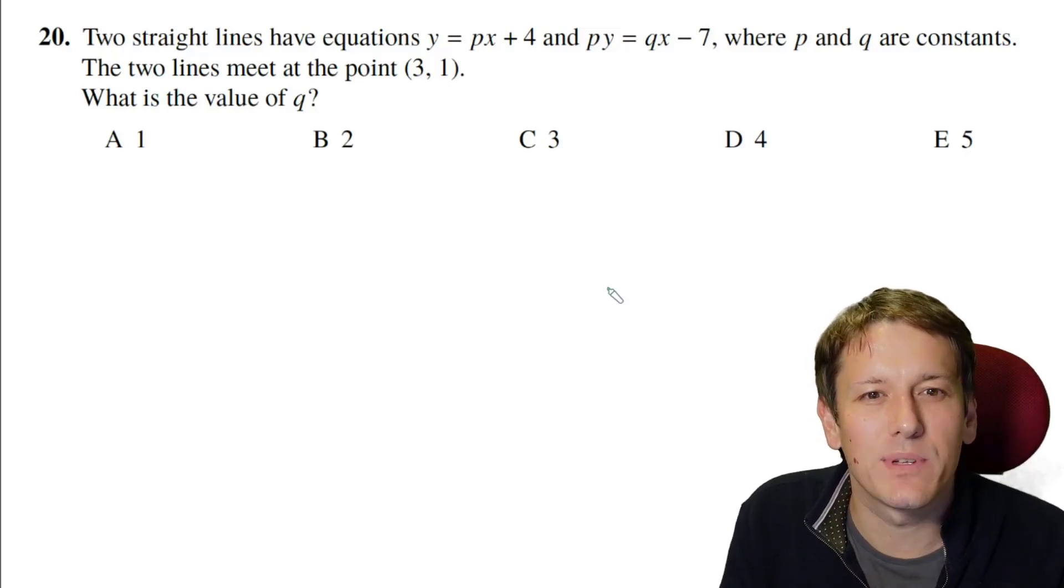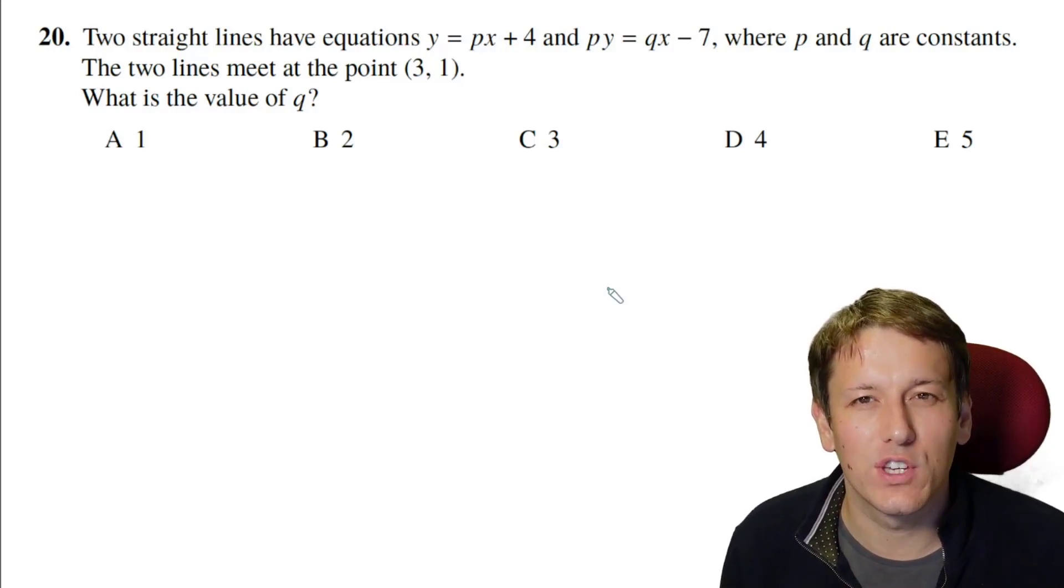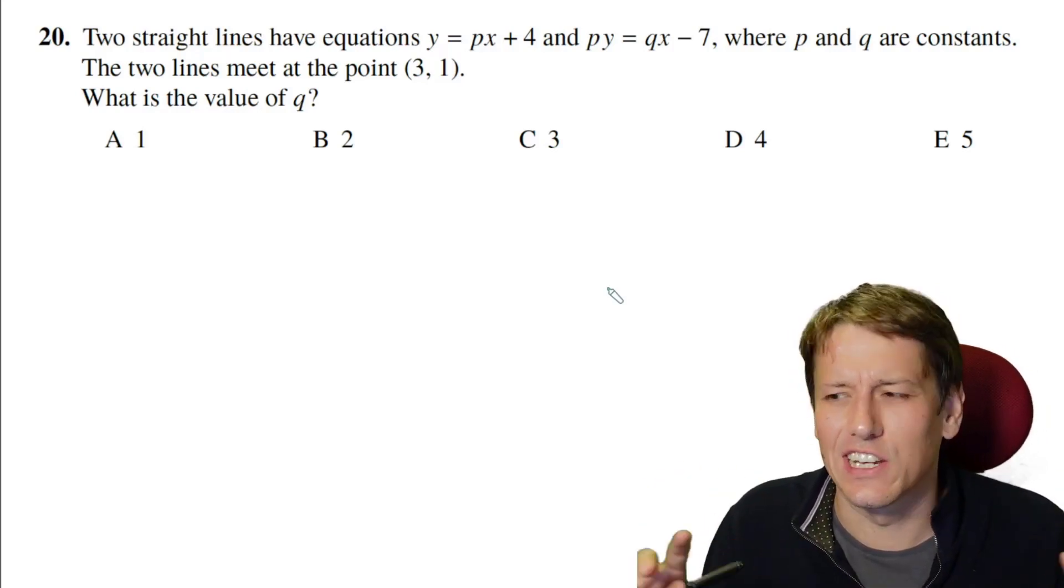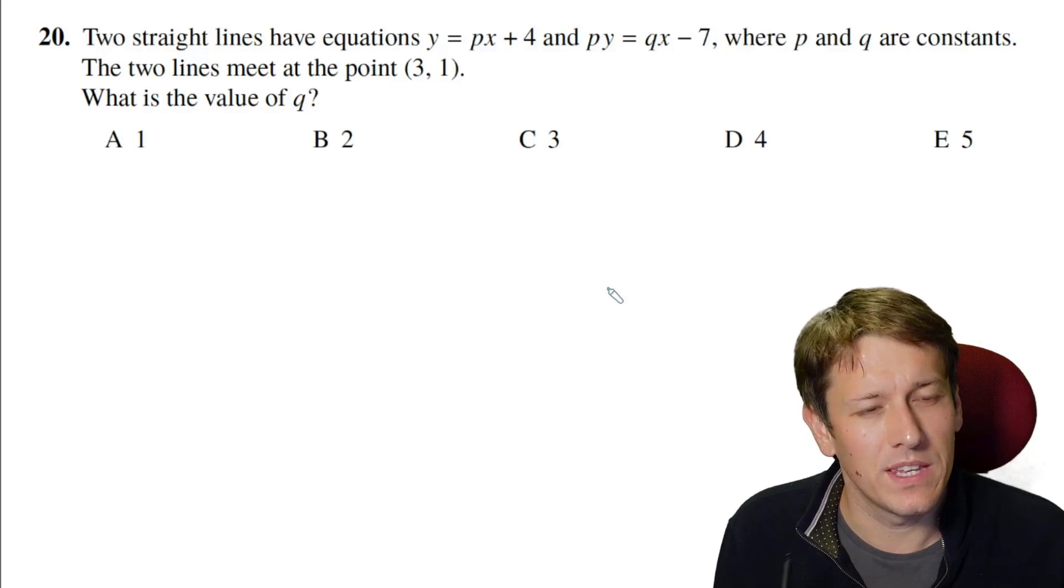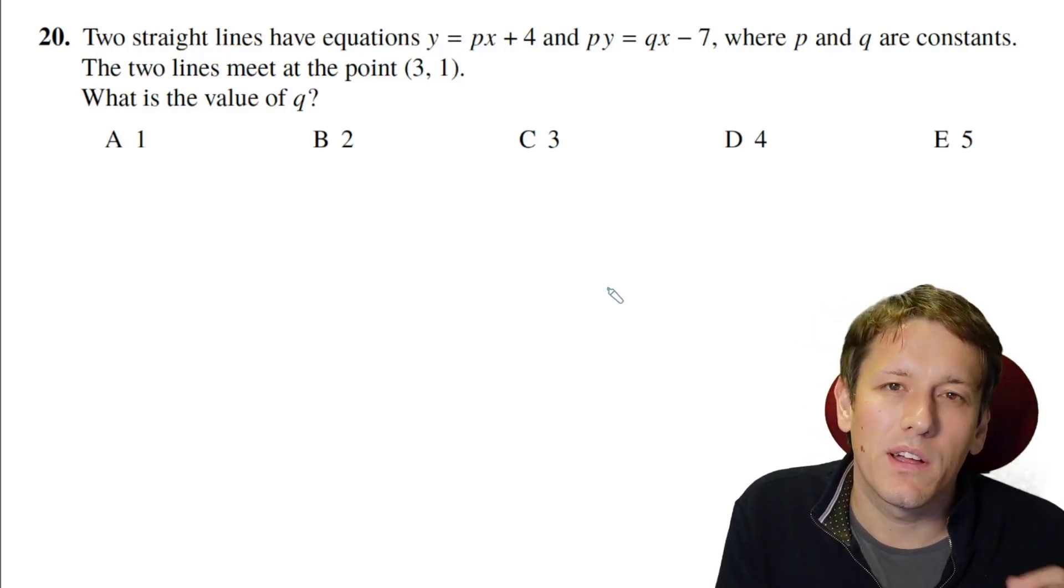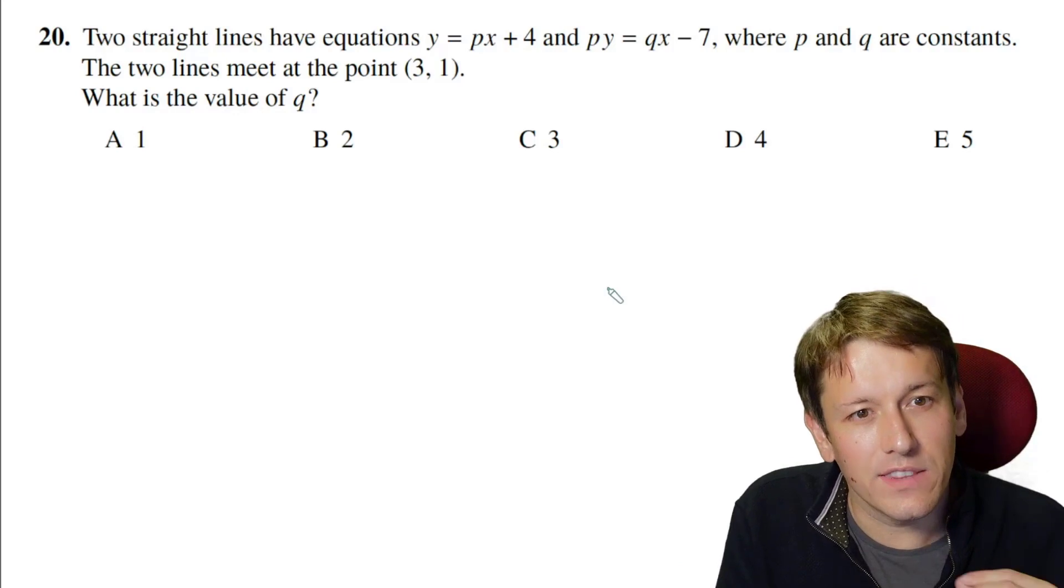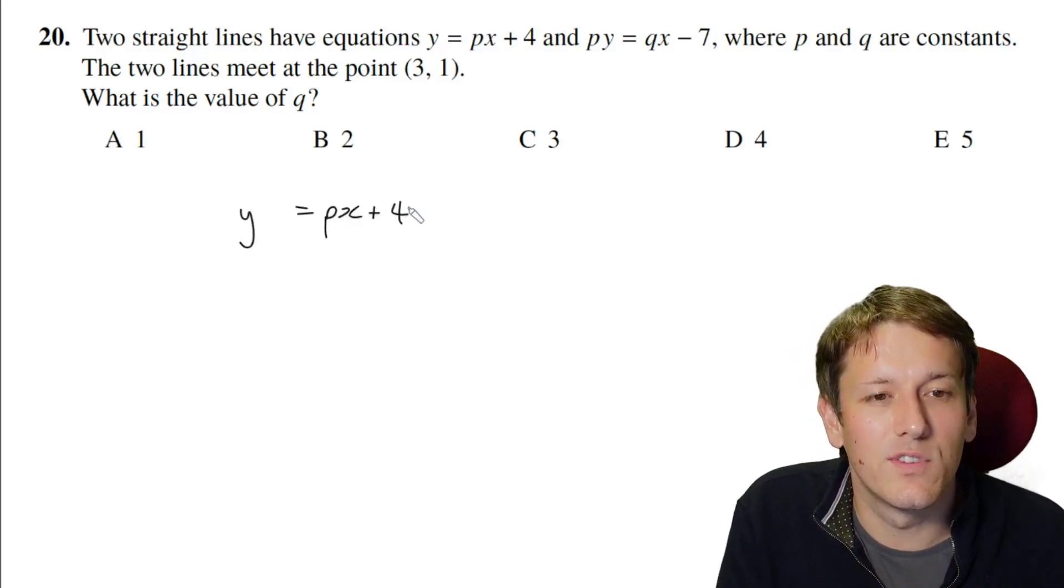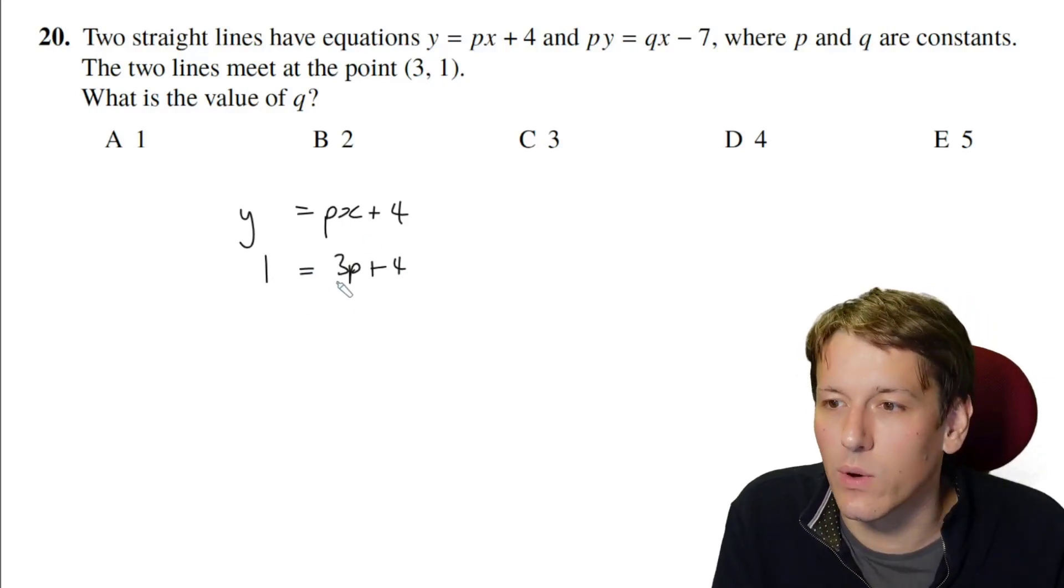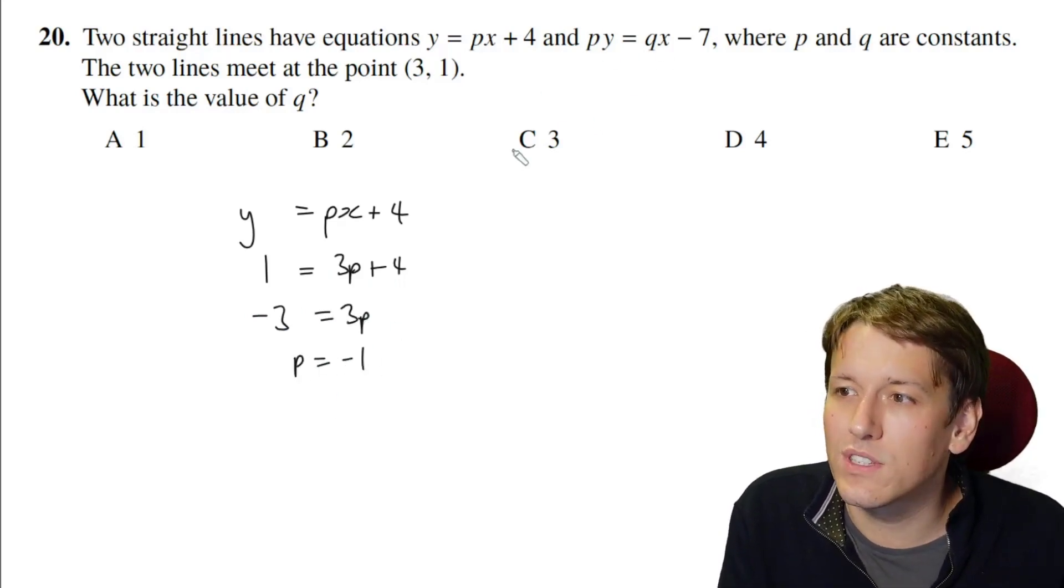Two straight lines have equations Y equals PX plus 4 and PY equals QX minus 7, where P and Q are constants, and we're told the lines meet at the point (3, 1), and we want to work out the value of Q. If you don't overthink this question and you get the first step right, it's actually quite easy, but it's easy to get bogged down by trying to think about what these lines actually look like and trying to draw them or something. The only idea we want to use here is that if the line passes through a point that's got these coordinates, (3, 1), then when I plug the X and the Y coordinates as X equals 3 and Y equals 1 into their equations, that that must work. So the fact that (3, 1) is on this first line, Y is equal to PX plus 4, well if I put in X equals 3, that will give me 3P plus 4, and then Y equals 1 here. I'll get an equation that'll just tell me what P is straight away. 1 equals 3P plus 4, so that's minus 3 equals 3P, and so P is equal to minus 1.